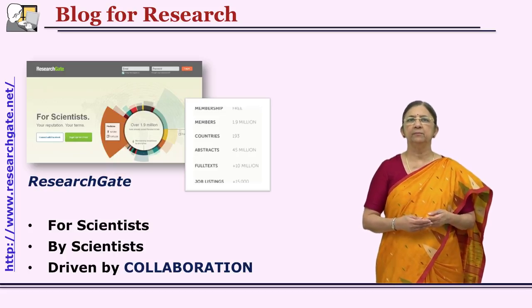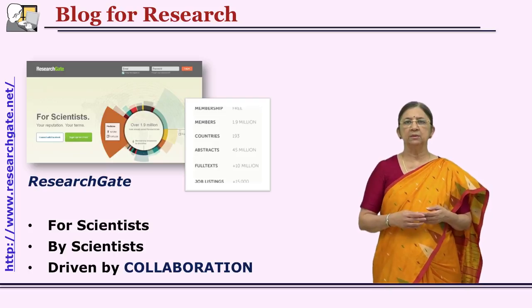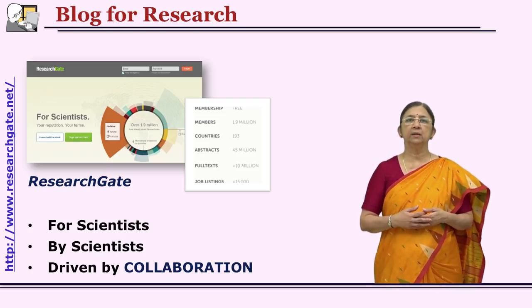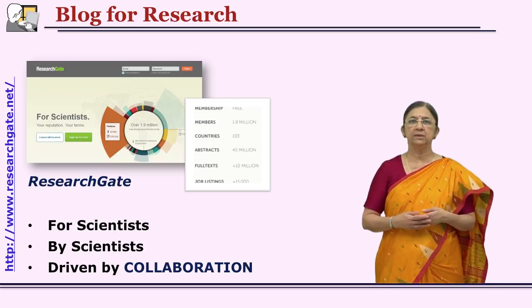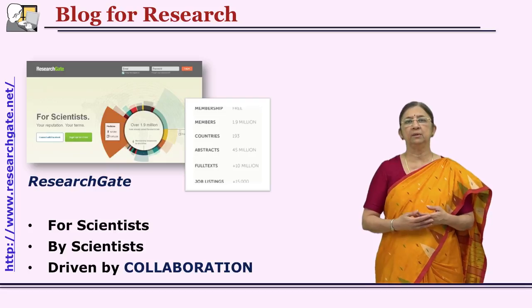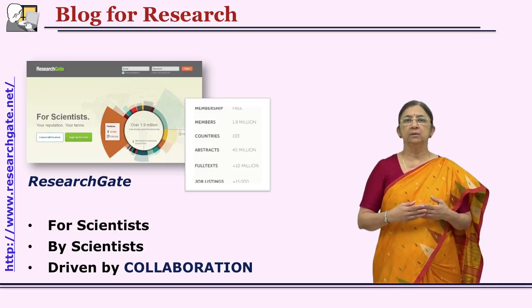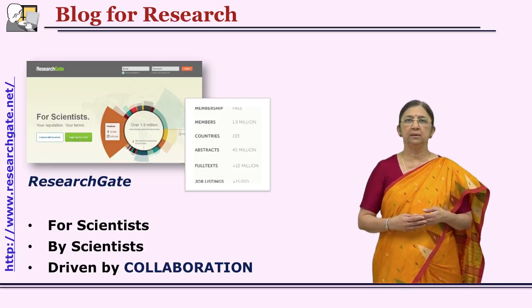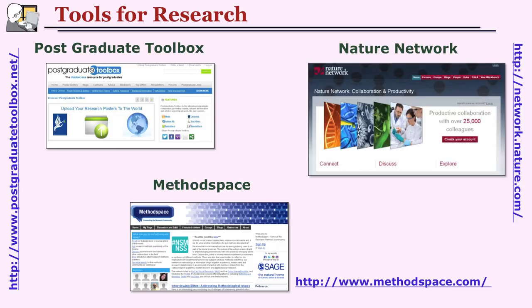ResearchGate is another platform for the researcher where you can share your thoughts and findings. Basically you can create a community — it is a community created by scientists for scientists. The major thought is that through collaboration we can learn a lot; together we can develop and generate knowledge. There are many other tools for researchers to create and share, such as Postgraduate Toolbox, Method Space, and Nature Network. You can go on exploring them — every platform and site has its own specialty and special features, and there are many such sites available for a researcher to make use of.